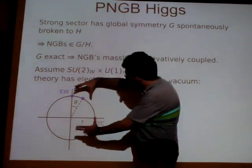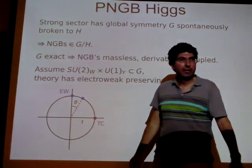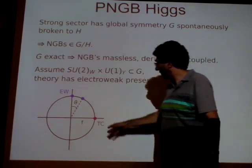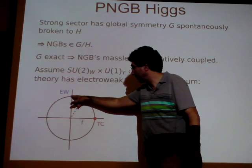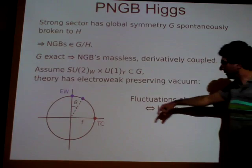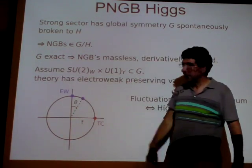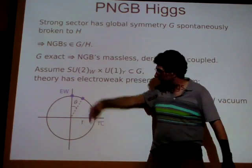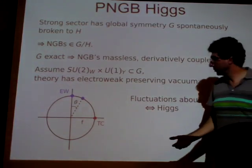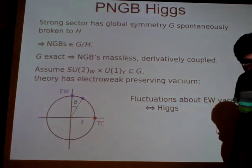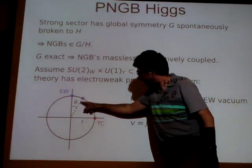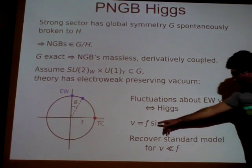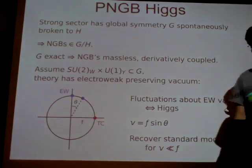What decides where the theory lives is that the bottom of this Mexican hat is not perfectly flat — it's tilted by the electroweak interactions themselves and other interactions that explicitly break G. We hope that those interactions make the theory live not precisely at the electroweak-preserving point, but nearby. Fluctuations about that nearby point are precisely Higgs fluctuations, because turning them on will break electroweak symmetry. So V = F sin θ — F is the radius, the projection onto the breaking axis is the electroweak-breaking VEV — and you want θ to be small so that V is much smaller than F.